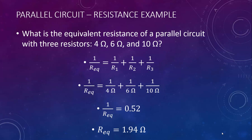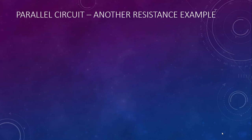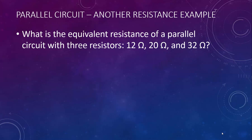Please make sure that you do this last step if you're trying to solve for the equivalent resistance of a parallel circuit. Here's another example for you to try: what is the equivalent resistance of a parallel circuit with three resistors of 12 ohms, 20 ohms, and 32 ohms?